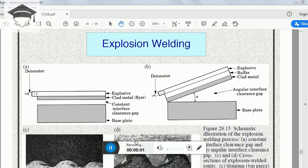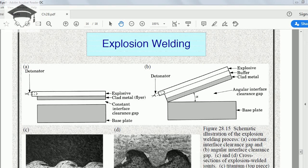In this video, I will be explaining what explosion welding is. Explosion welding is a kind of solid state welding in which we use explosive sheets to carry out the welding process.